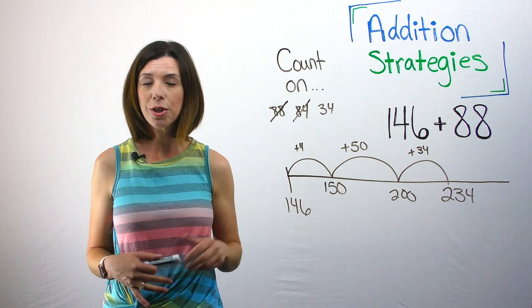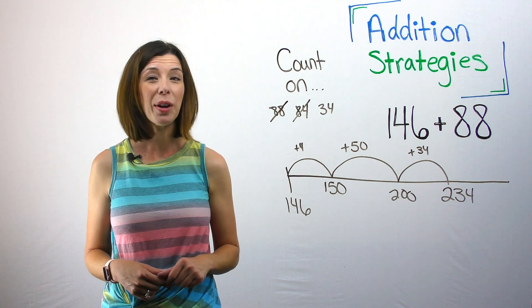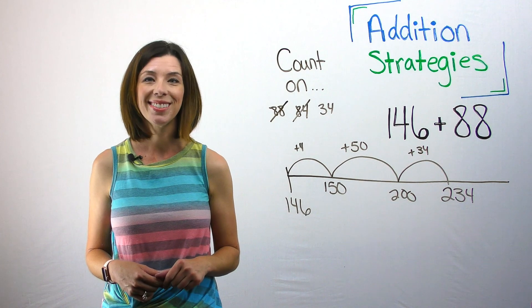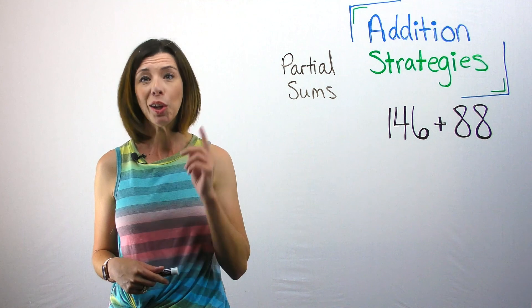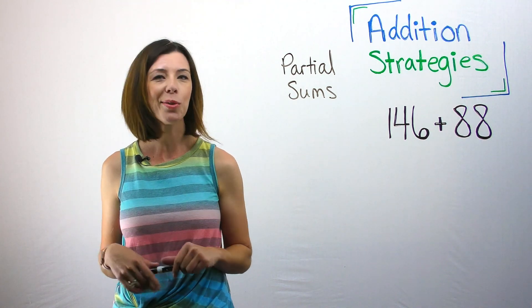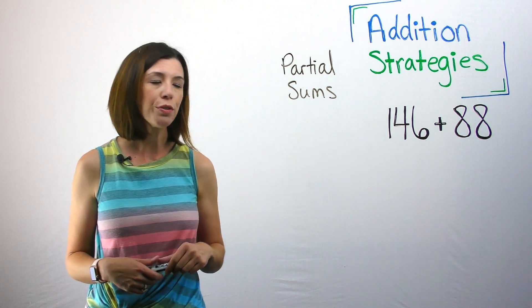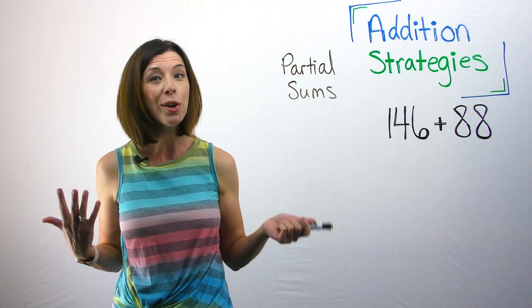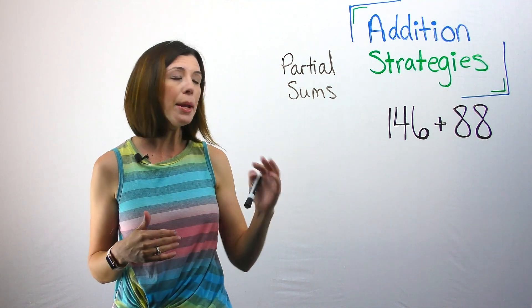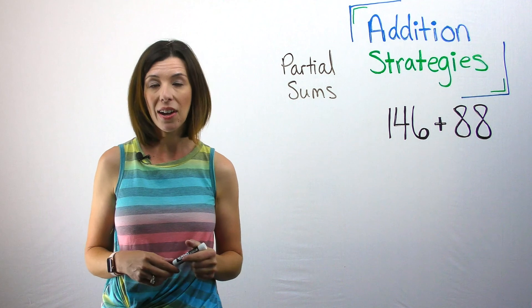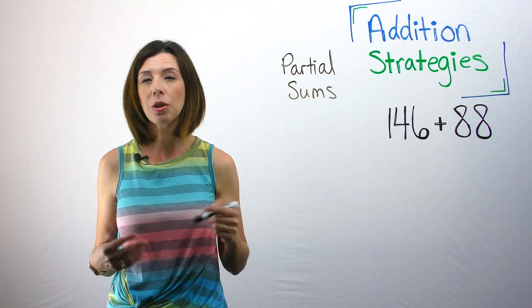Now let me show you the second strategy, which we refer to as partial sums. This is really great for mental addition. Here's what's cool about partial sums. Chances are high you already do this one. You just didn't know it was called partial sums. So let's take a look again. We've got 146 plus 88 still. Now we know the answer is 234. We can do this mentally by breaking apart our numbers by place value. By the way, this is only one way that you can do partial sums. I'm going to show you another way in just a minute.